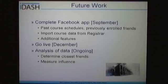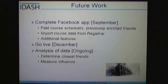At that point, we'll start requesting that students participate in our study and begin gathering actual student data. Once we build the social graph model, we can begin analysis of the data to see how different characteristics — such as GPA, infection, or mental health — spread throughout the social graph.